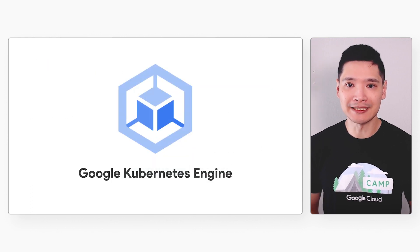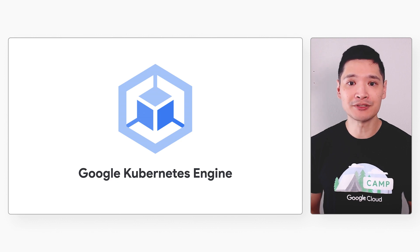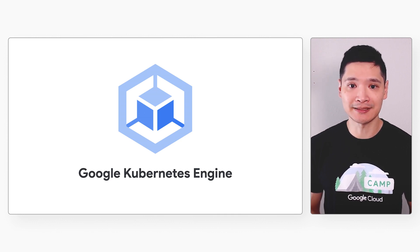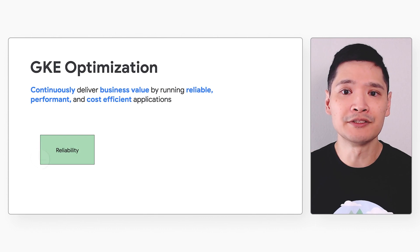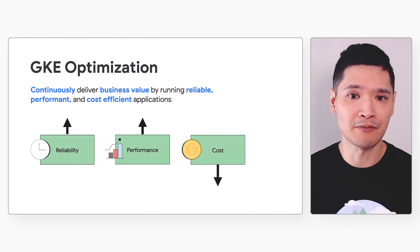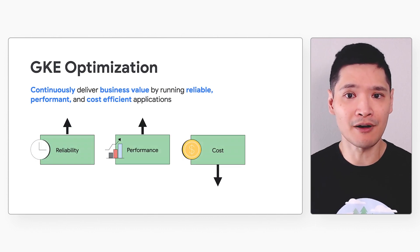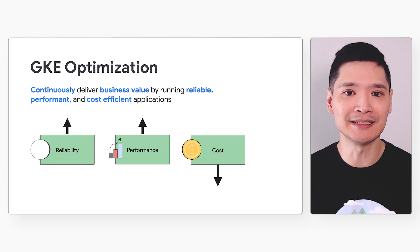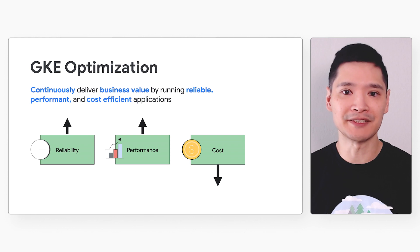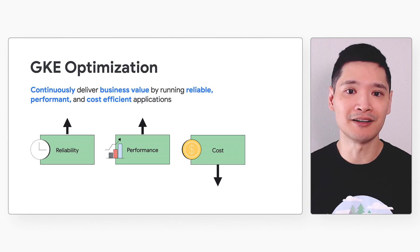Google Kubernetes Engine, or GKE, runs Kubernetes, the open-source container orchestration platform on a managed cluster of virtual machines. One of the solutions offered as part of CAMP is GKE Optimization. With this offering, our goal is to help customers continuously deliver business value by running reliable, performant, and cost-efficient applications on GKE.